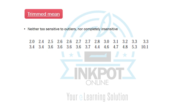We calculated the mean and the median and realized that the mean is too sensitive to outliers — it gets pulled in the direction of the outliers — while the median is completely insensitive because it does not take into account the outliers at all and focuses only on the middle observation. So we would like to find a middle path.